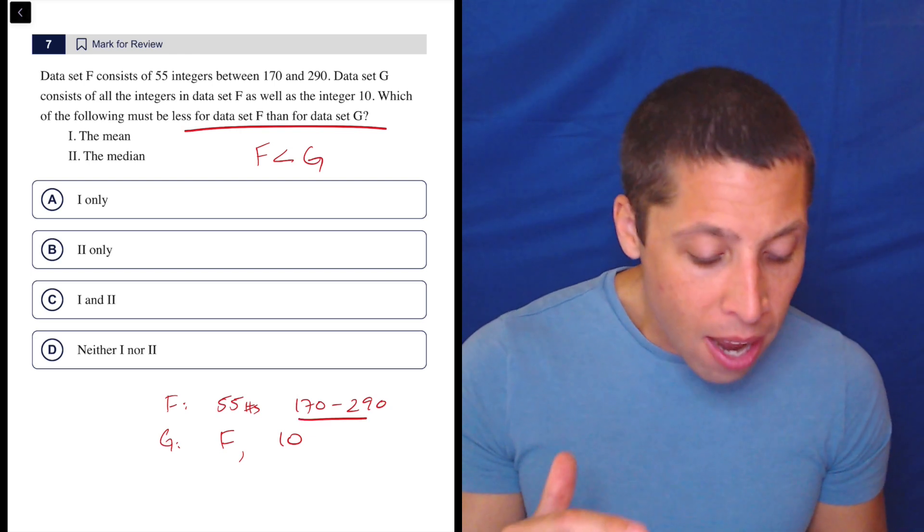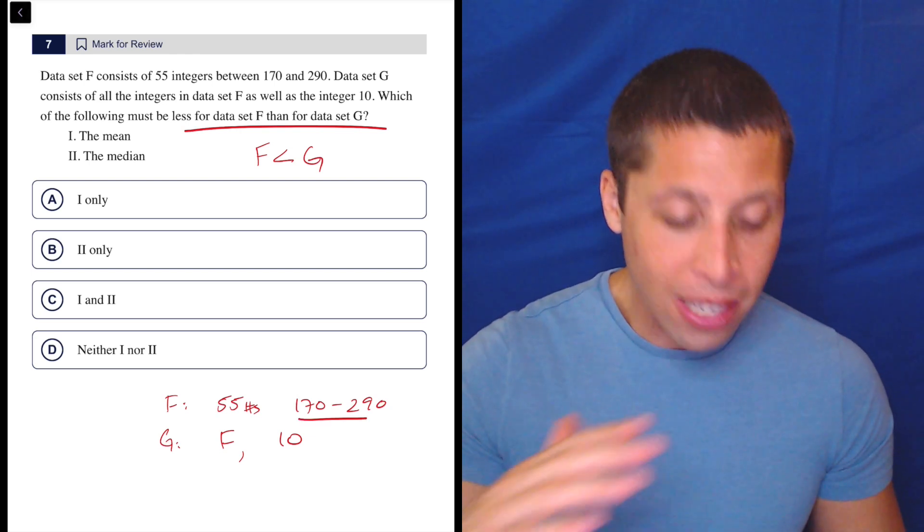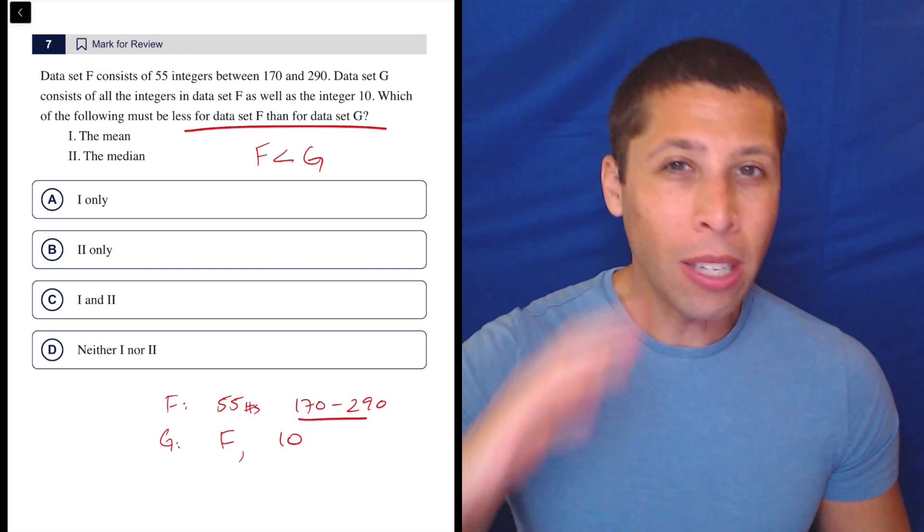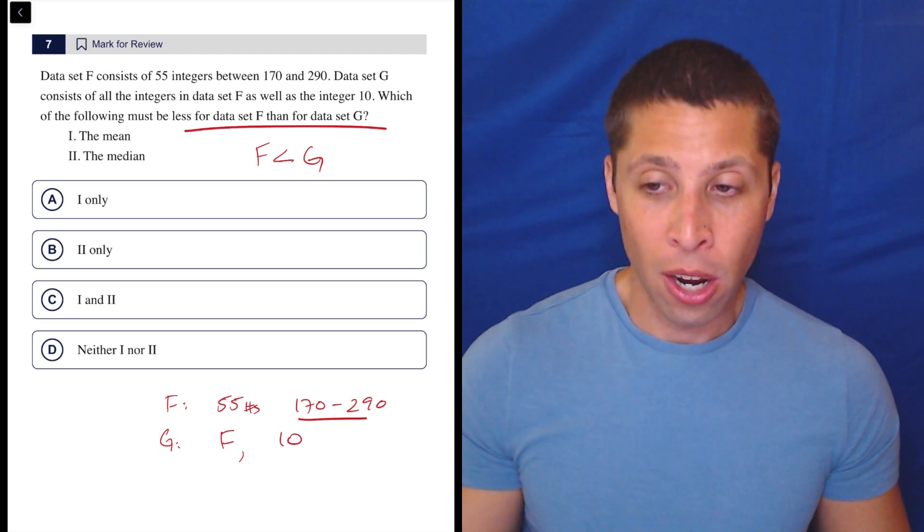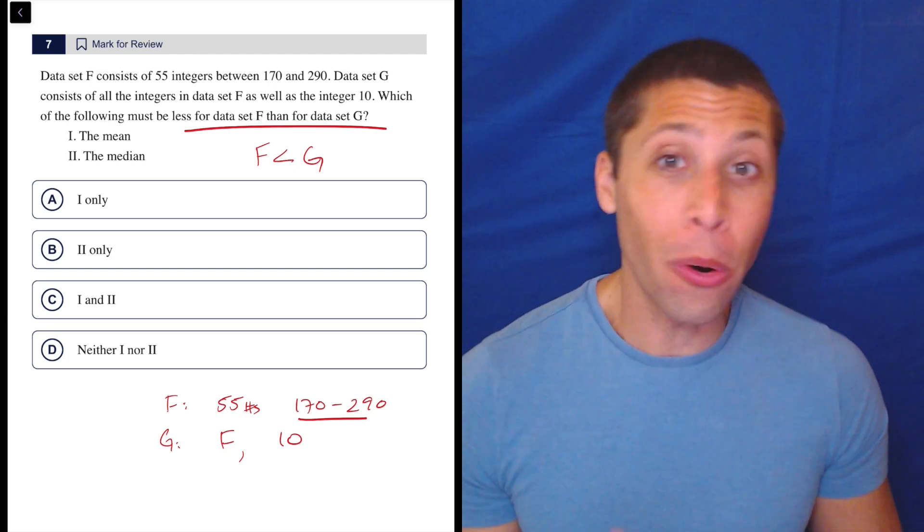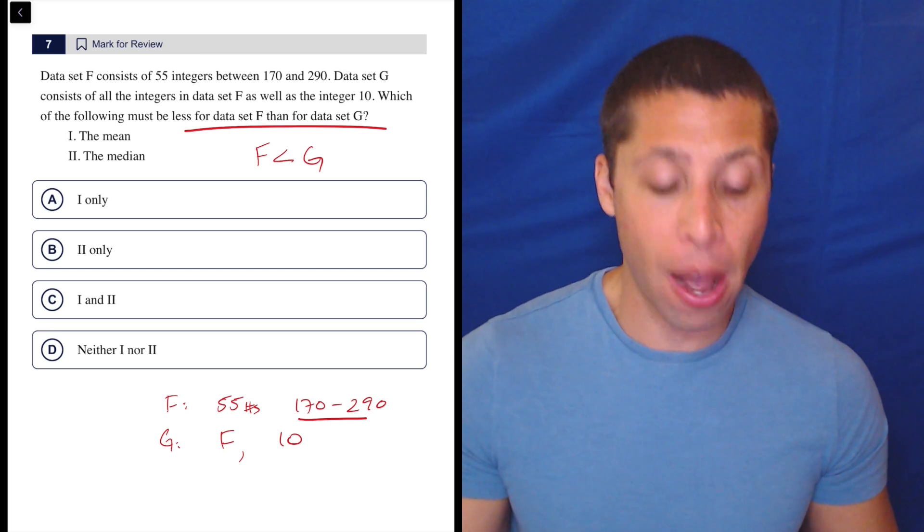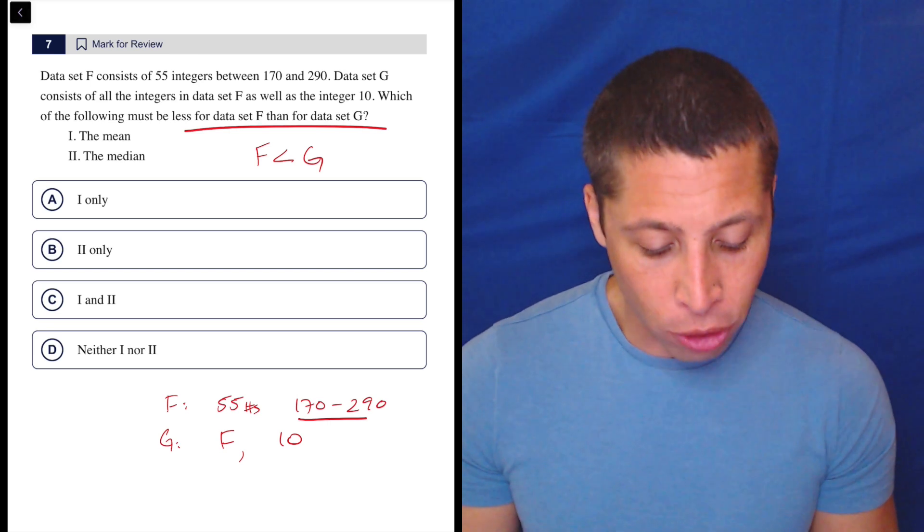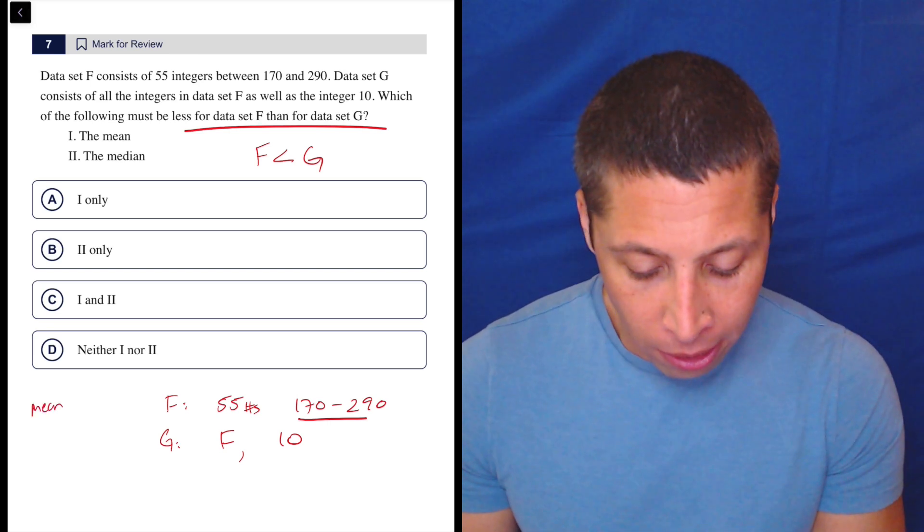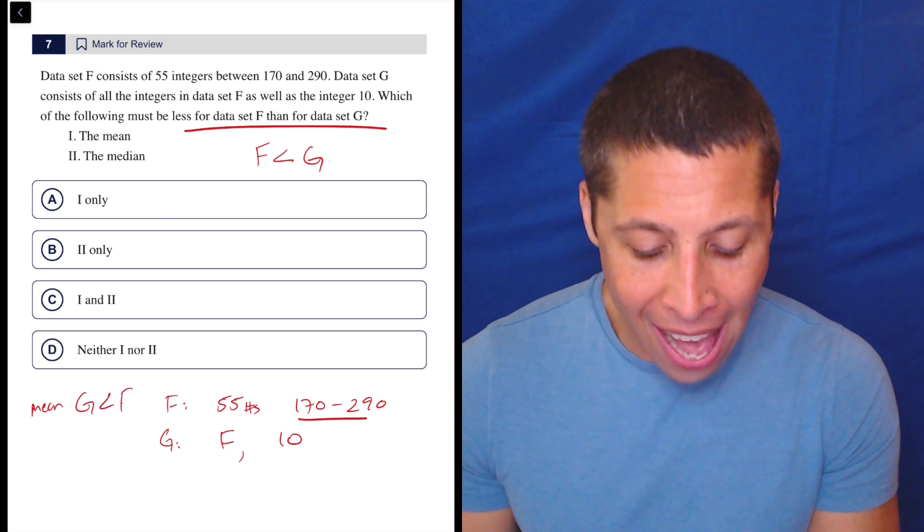Well, none of the numbers in data set F is even close to 10. So if we throw a 10 in there, we are absolutely going to lower that average by probably a decent amount. So this is a case then where G for the mean, G is going to be less than F.